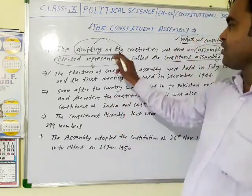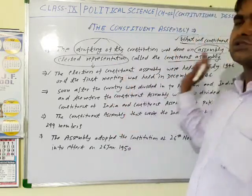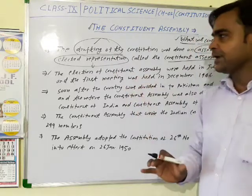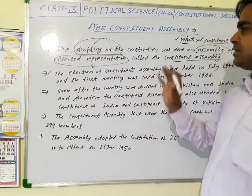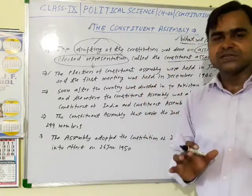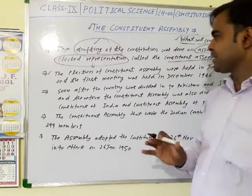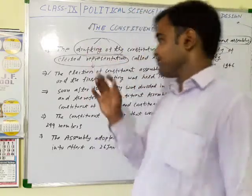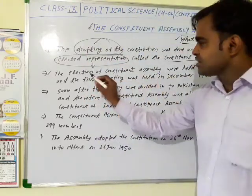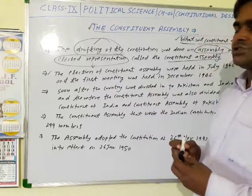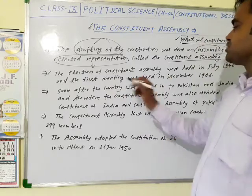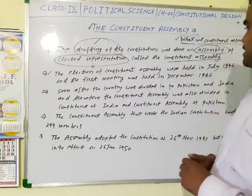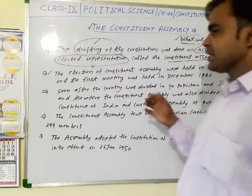So to be clear, the drafting of the Constitution was done by an assembly of elected representatives called the Constituent Assembly. The election of the Constituent Assembly took place on this basis.